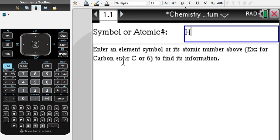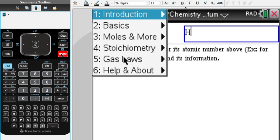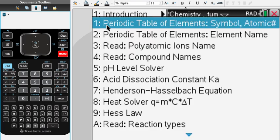First hit menu on your calculator. Then you're going to hit basics. We're going to hit the first one, this one here: periodic table of elements, symbol and atomic number. Press that.